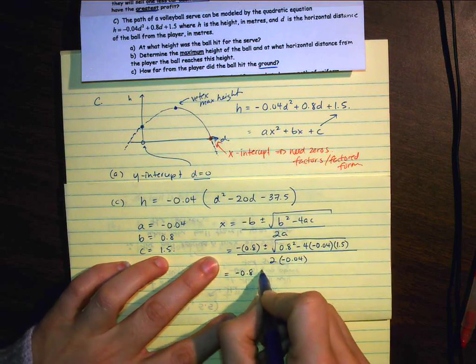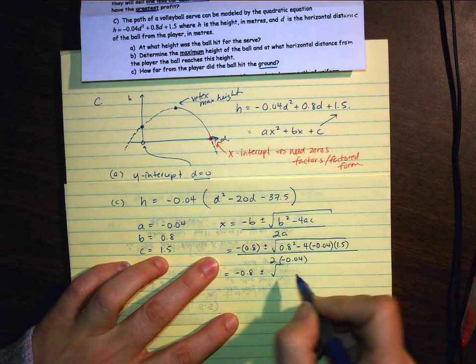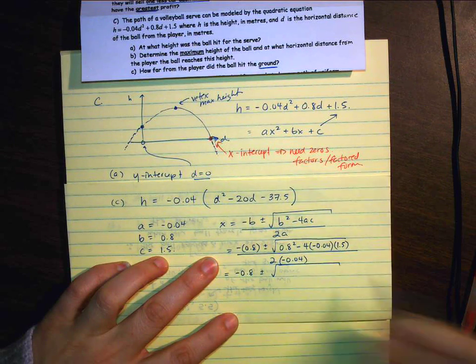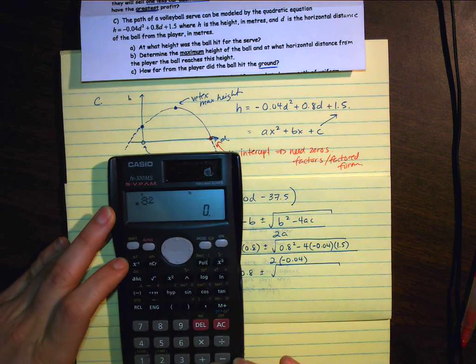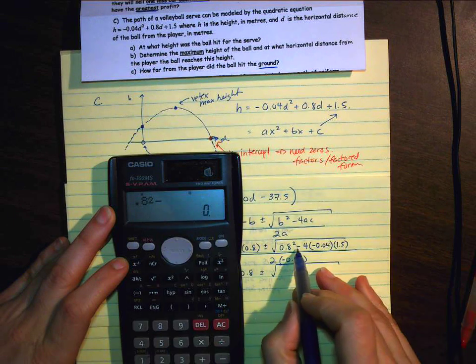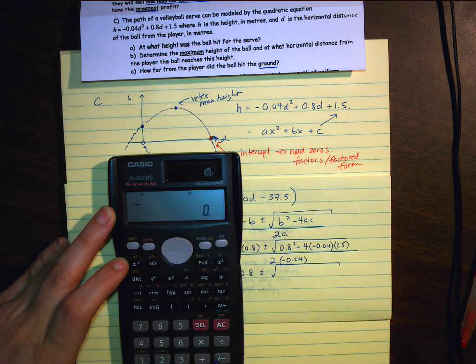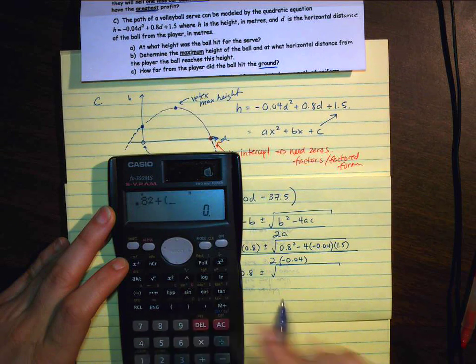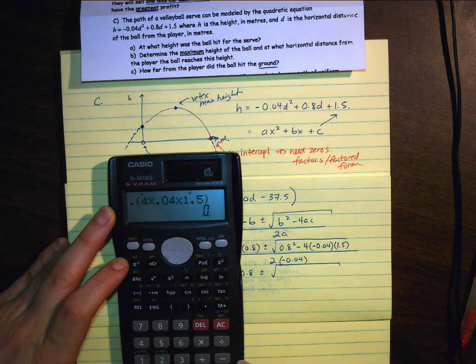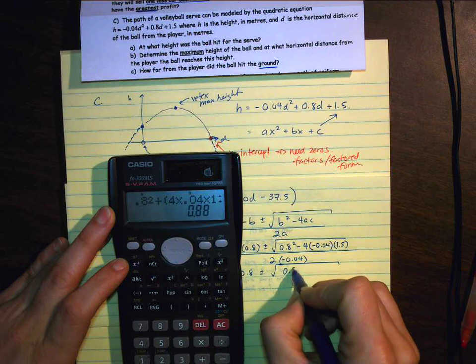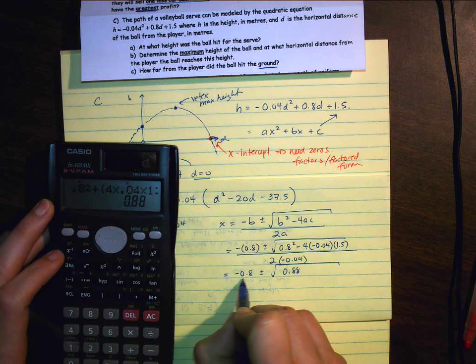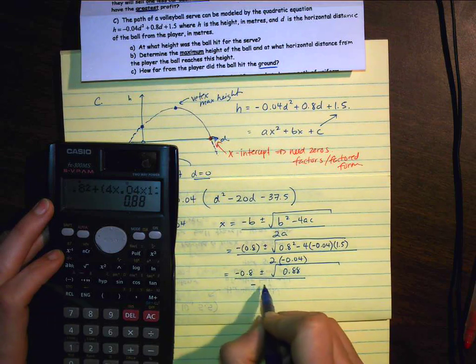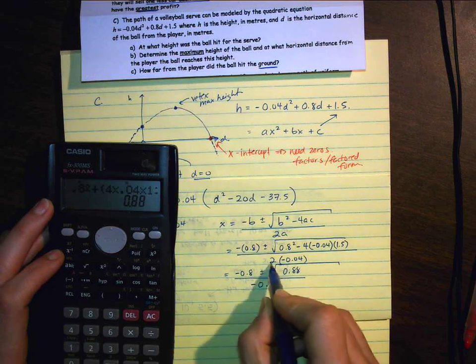So what I'm going to do is write down some of my numbers. Negative 0.8 plus or minus. I am going to do this on my calculator. 0.8 squared. Well, what I do is I look here, and this is actually going to be a positive number. So it's going to be 0.8 squared. I'm going to add, open a bracket. It's going to be 4 times 0.04 times 1.5. I'm going to close the bracket. So everything under the square root should be 0.88. And that's going to be negative 0.08. Multiply 2 times that.